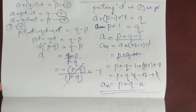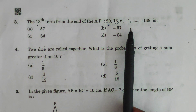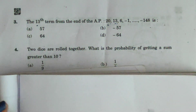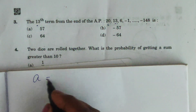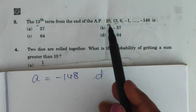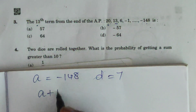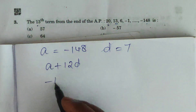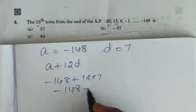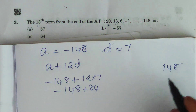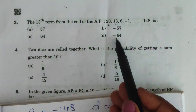Set 2: MCQ question — find the 13th term from the end of an AP. We reverse the AP so the last term becomes the first term: a = -148 and d = 7 (opposite sign). The 13th term is a + 12d = -148 + 12×7 = -148 + 84 = -64. That is the answer.